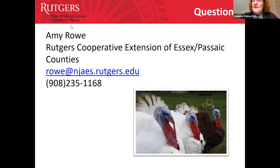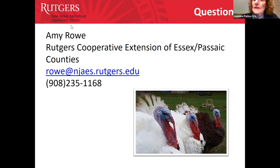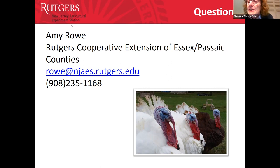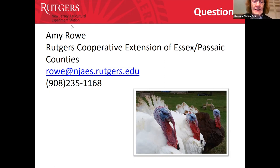Contacting NRCS would also be a good idea — they may come out and help develop a plan. For rain gardens, at water.rutgers.edu clicking the rain gardens link gives access to the New Jersey Native Plant Society book on building a rain garden, which has excellent plant lists.